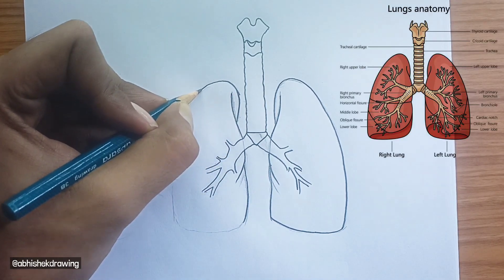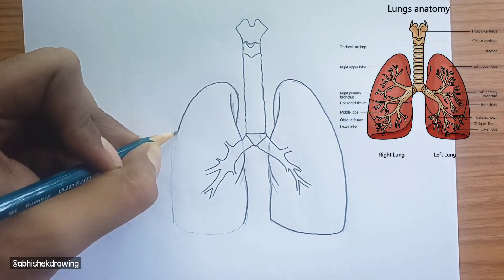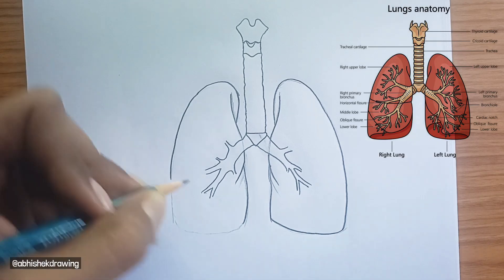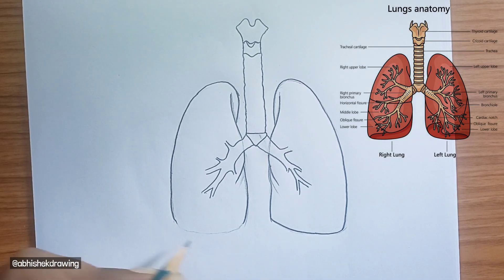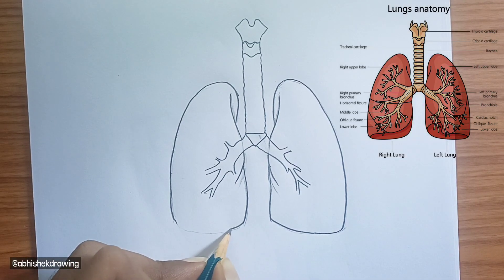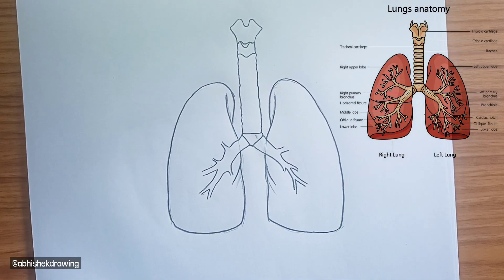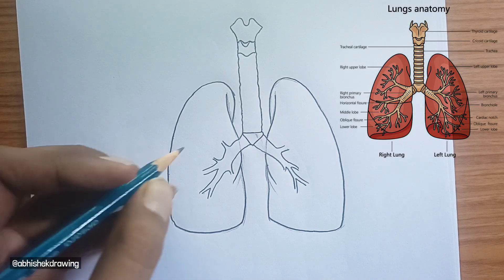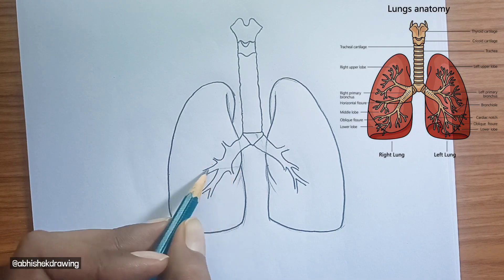This diagram illustrates the anatomy of the human lungs and associated respiratory structures. Here's a breakdown of the key components shown. Upper respiratory and laryngeal structures, top to bottom.